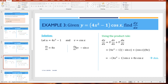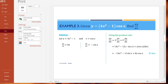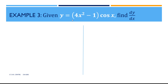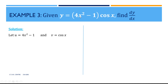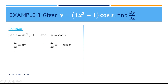Example 3: y equal to (4x squared minus 1) times cos x. We want to find dy/dx. Our first step is to make our substitution. We let u equal the first function 4x squared minus 1, and v equal the second function cos x. Differentiating each one: du/dx gives us 8x, since the differential of minus 1 is 0. And dv/dx is equal to minus sin x.